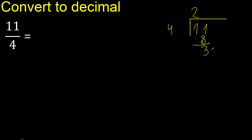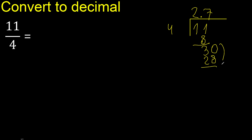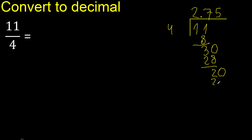There is no number that goes down, therefore complete — always complete with 0 — and here with point 30. 4 multiplied by which number? Multiplied by 8 is 32, is greater. Multiplied by 7 is 28. Subtract: 2. Complete point only once. 20 — 4 multiplied by 5 is exactly 20. Finish, because the remainder is 0.